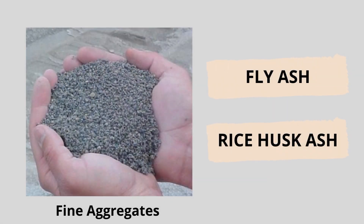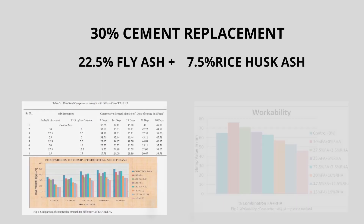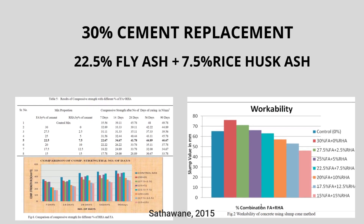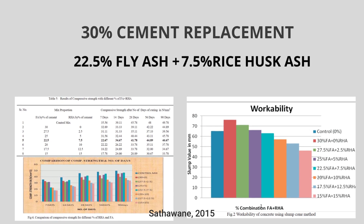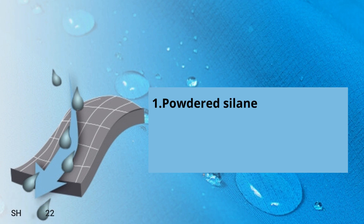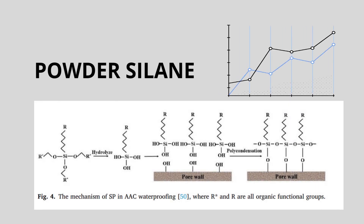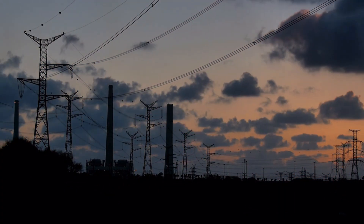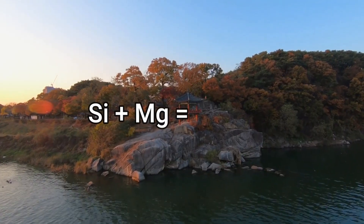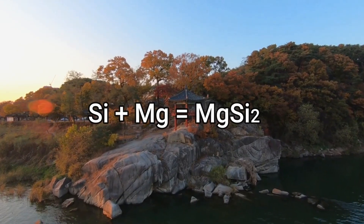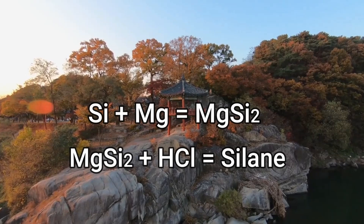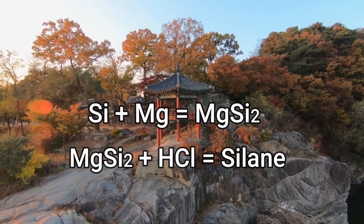Both rice husk ash and fly ash together will entirely replace the fine aggregate in our concrete mix design. The replacement of 30% cement by 22.5% fly ash and 7.5% rice husk ash will result in an environmentally friendly modified AAC. To make it waterproof, we have options to choose water repellents among powdered silane, zinc stearate, water-dispersible zinc stearate, and osmotic crystalline. Among those hydrophobic agents, we chose powdered silane as it is reported to increase the compressive strength of the AAC panel and also reduce water absorption capacity by a considerable percentage. In large-scale industries, the silica in sand reacts with magnesium to form magnesium silicide, which then reacts with hydrochloric acid to form silane, which is then powdered into a suitable size for the concrete mix design.